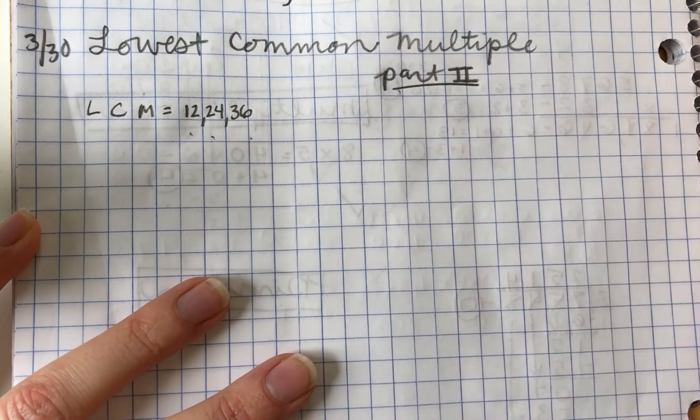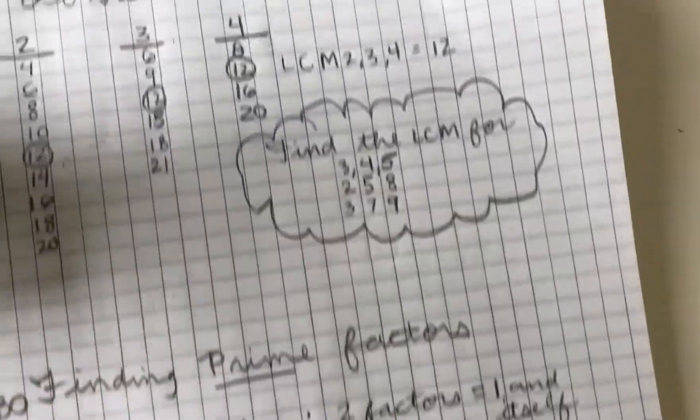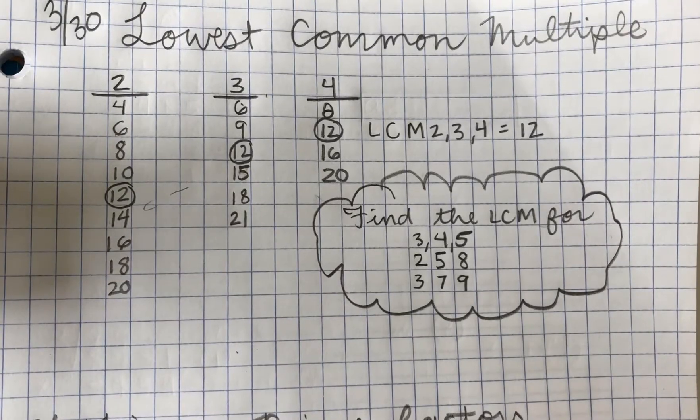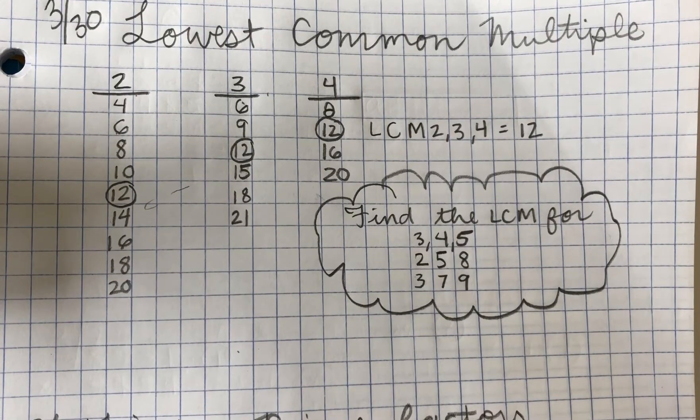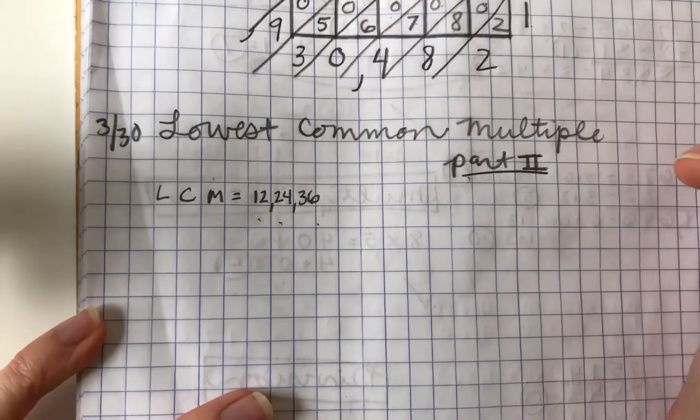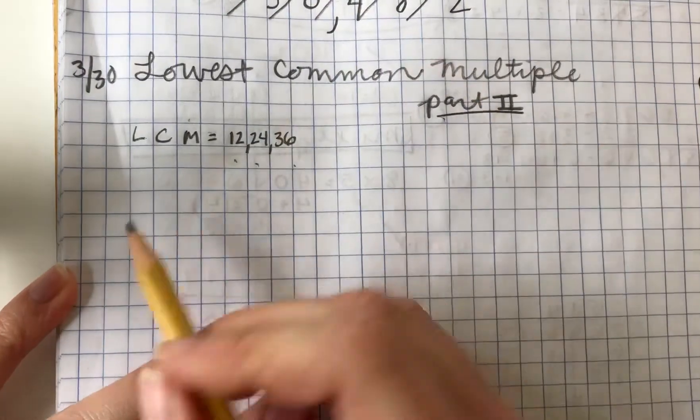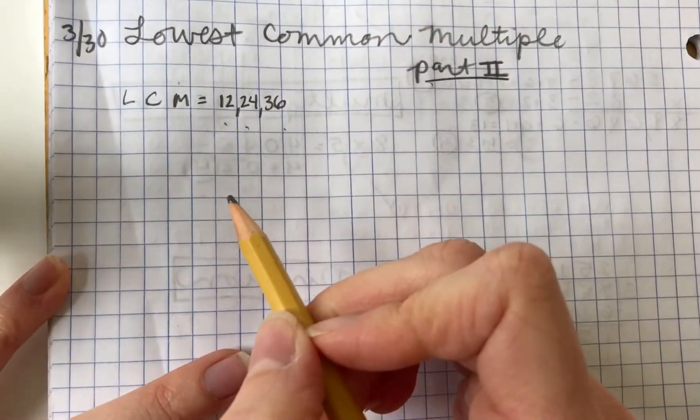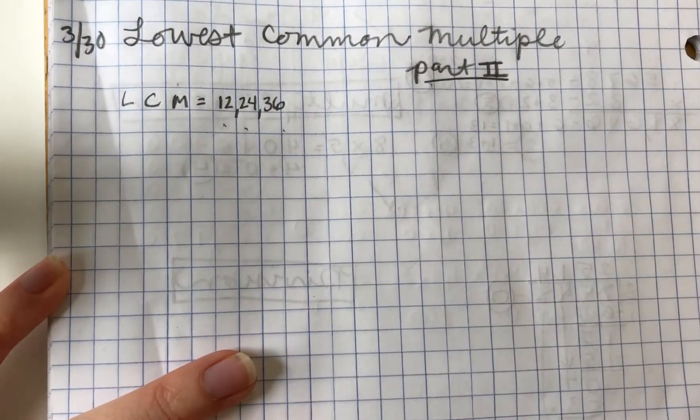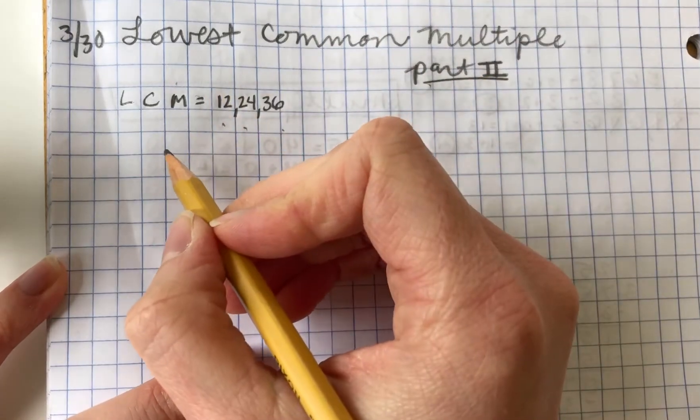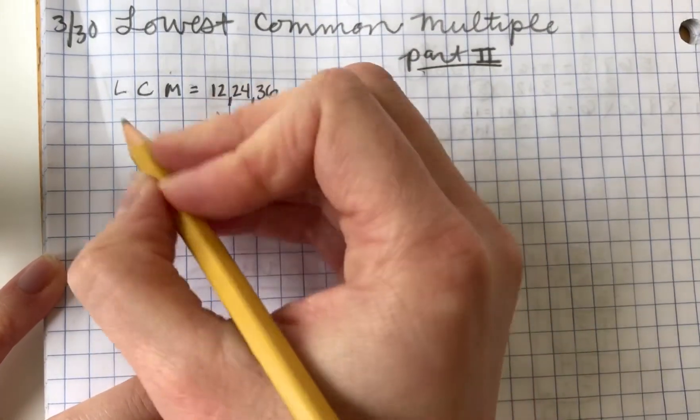We could do it like we did on Lowest Common Multiple part one where we just wrote out our multiples, but that's not going to be the best way here. So here's what I will show you. We are going to find the prime factors of these numbers just like we did in the prime factors exercise. So I'll do a quick little review of that.